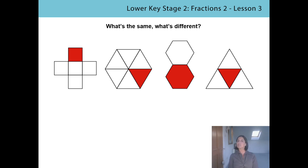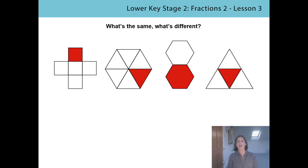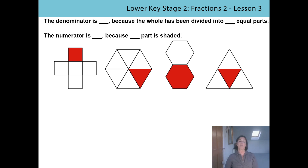Are we ready? Did everyone spot that all of the shapes are different? But did anyone spot anything else that's different? Yes — each of the shapes has been divided into a different number of equal parts. And what's the same about all of them? Each one of the shapes has only got one part that's shaded. So that's the same in each one. Pens and papers at the ready — we're going to write each of these fractions in turn, using our sentence to explain what the denominator and numerator mean.